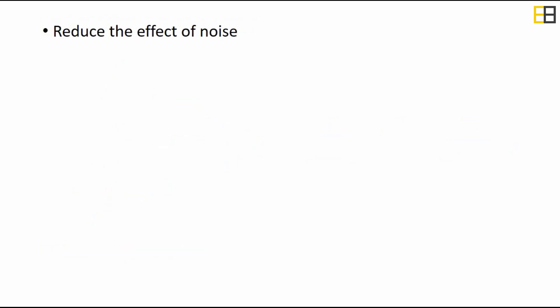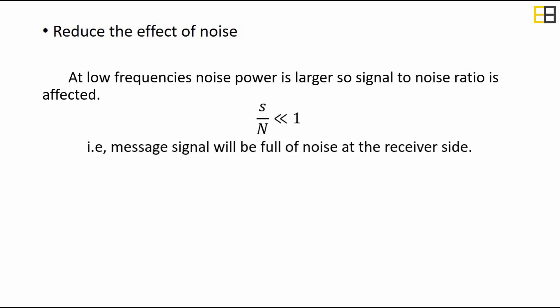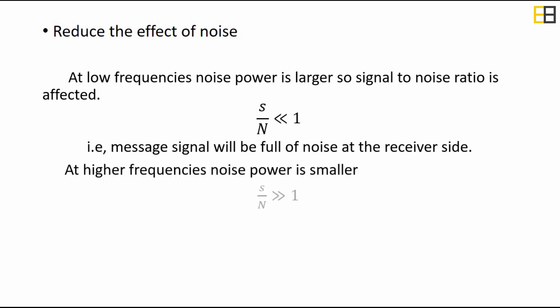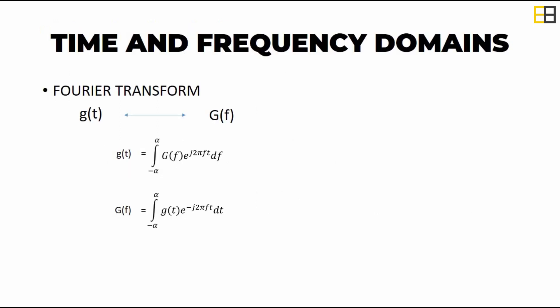We'll learn about this multiplexing in detail in the upcoming lectures. Modulation also reduces the effect of noise. At low frequencies, noise power will be larger, so the signal to noise ratio will be much lower than one — that is, the message signal will be full of noise and difficult to recover at the receiver side. At higher frequencies, noise power will be smaller, so the signal to noise ratio will be much larger than one, and the message signal can be easily recovered.